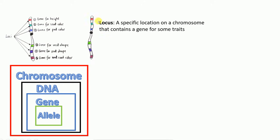Now, what is a locus? A locus is the location of a gene on a chromosome. For example, on homologous chromosomes, the location of the gene for height on the chromosome is called its locus. Similarly, the location of the gene for seed shape is its locus. So locus is the specific location on a chromosome where a gene is found.